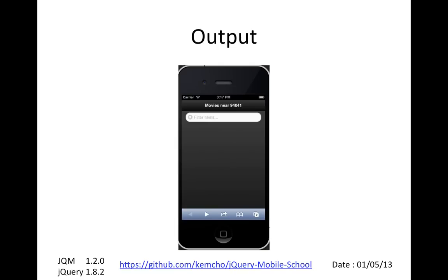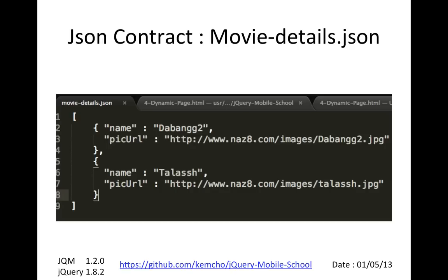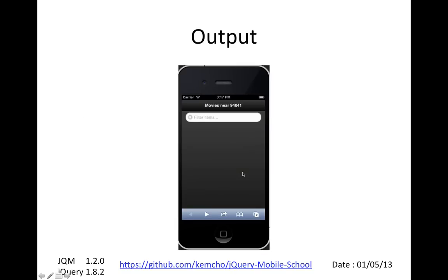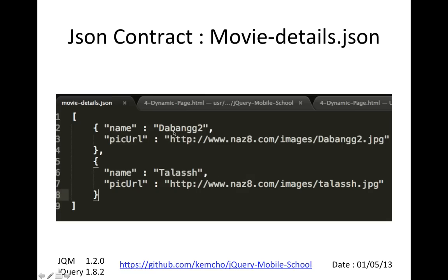So the output looks very simple — nothing, right? And then we create a new file called movie-details.json. That's the file which has all the dynamic data that this app can ever read. We're going to extract the name of the movie and the picture URL of that movie into this dynamic file.